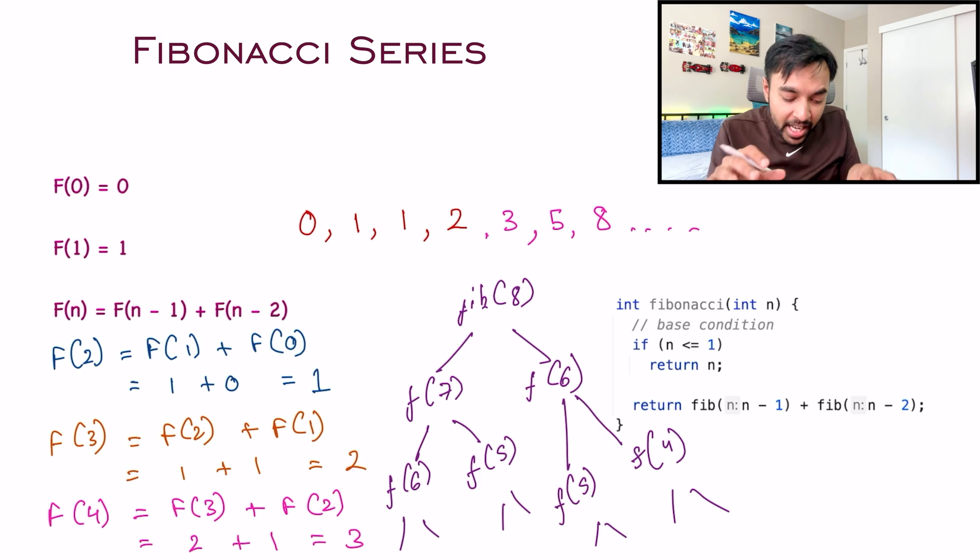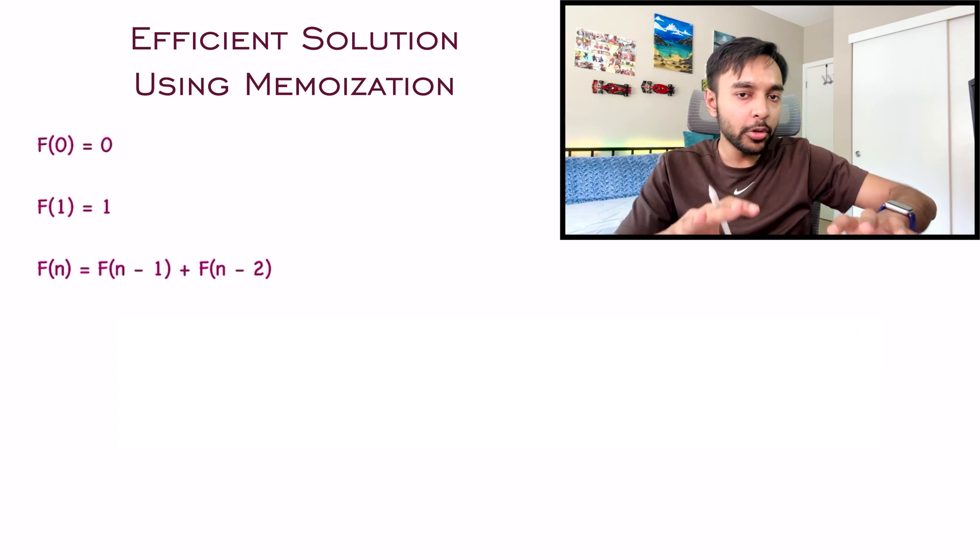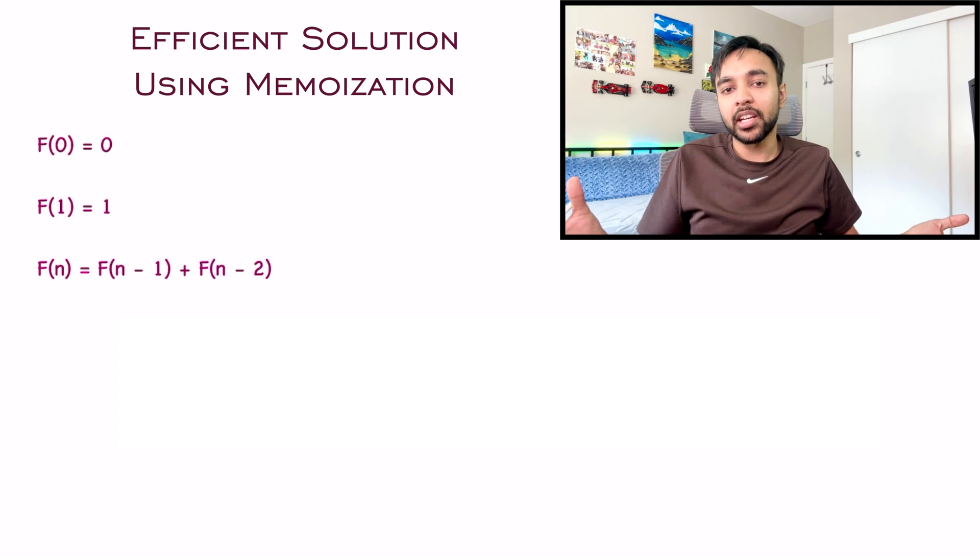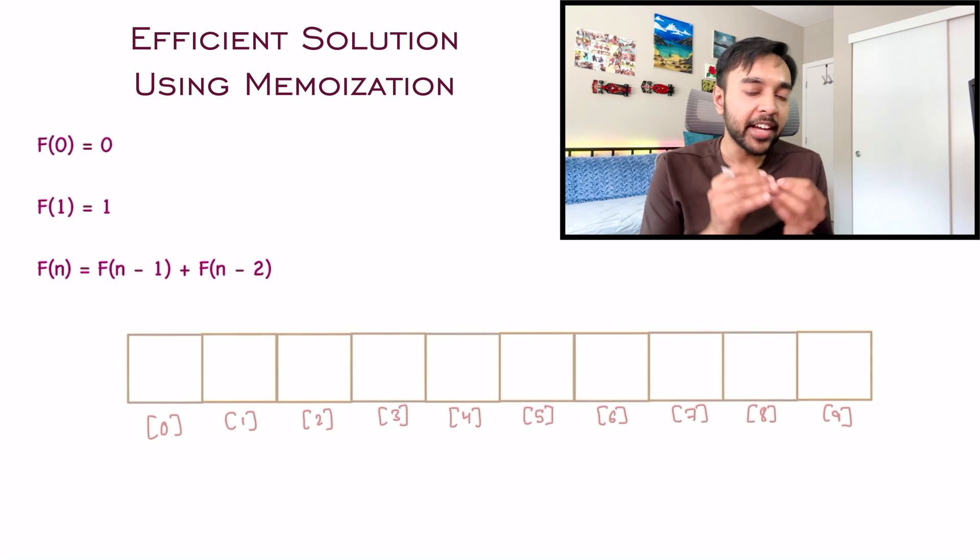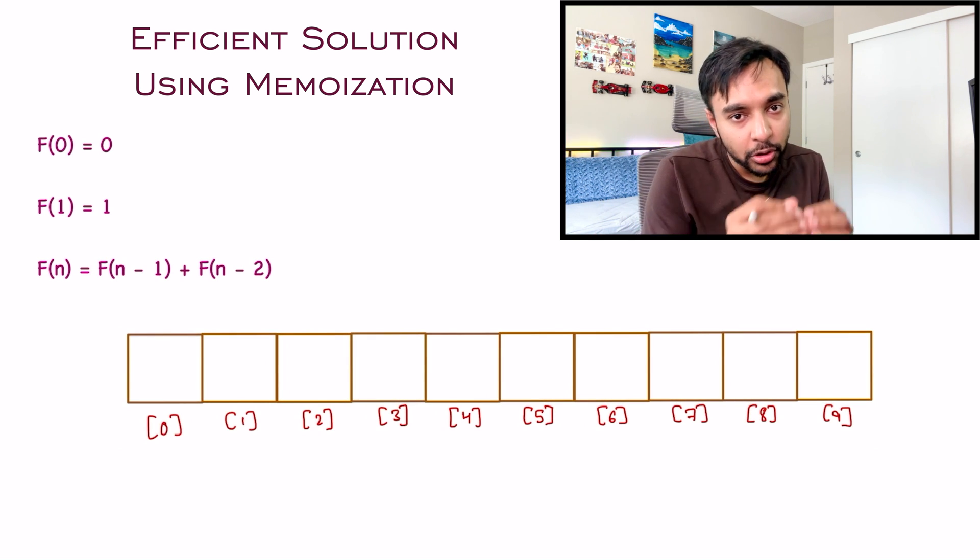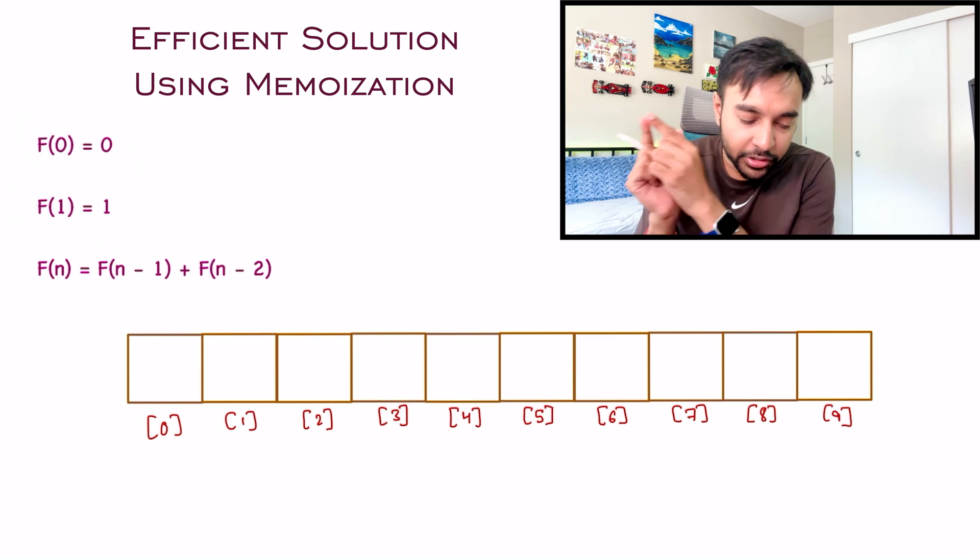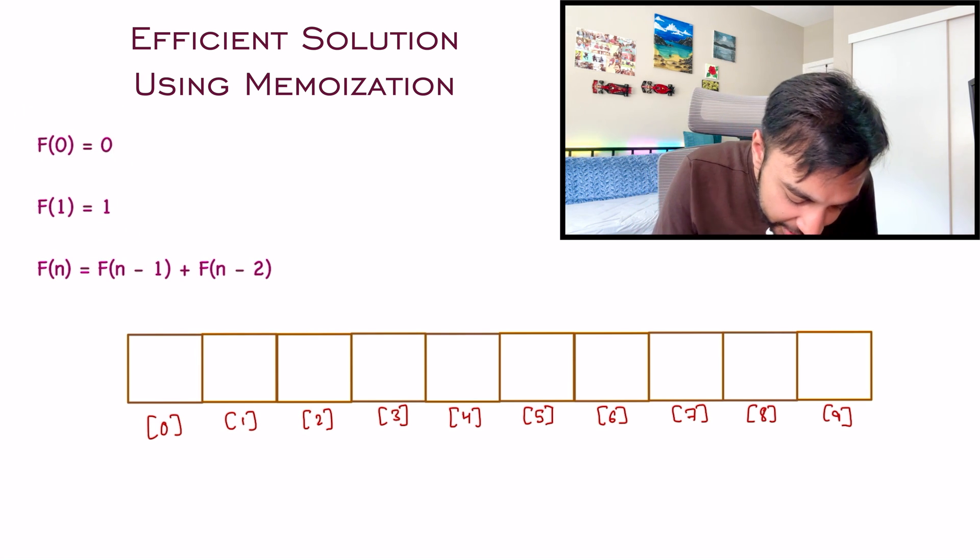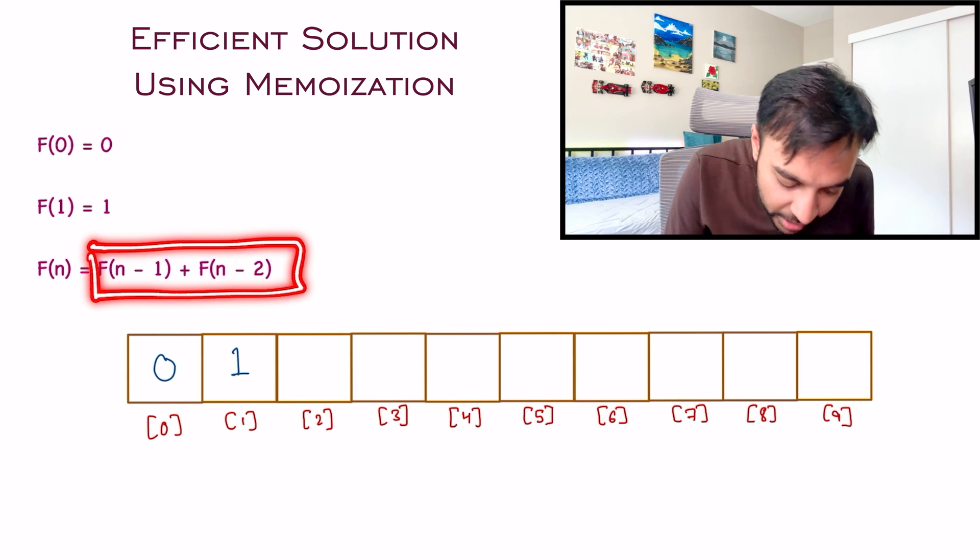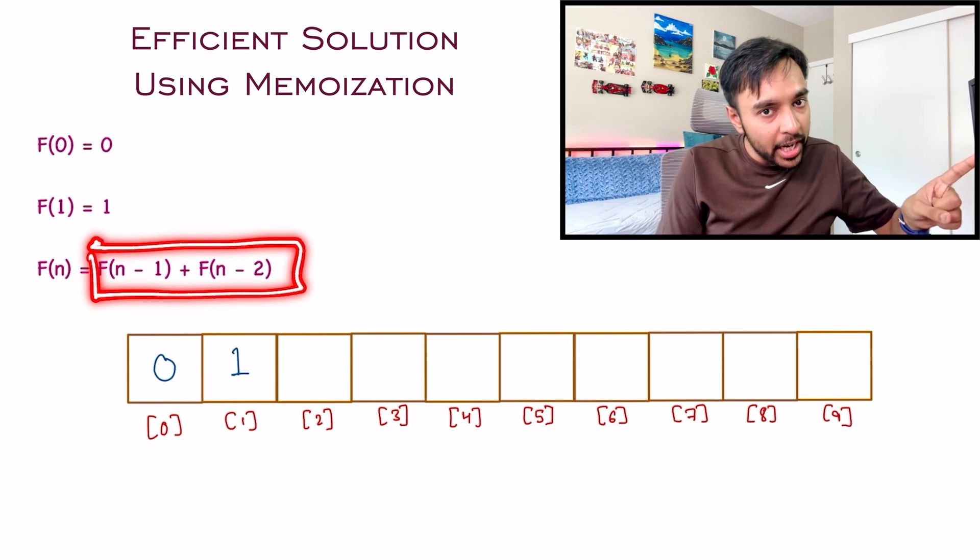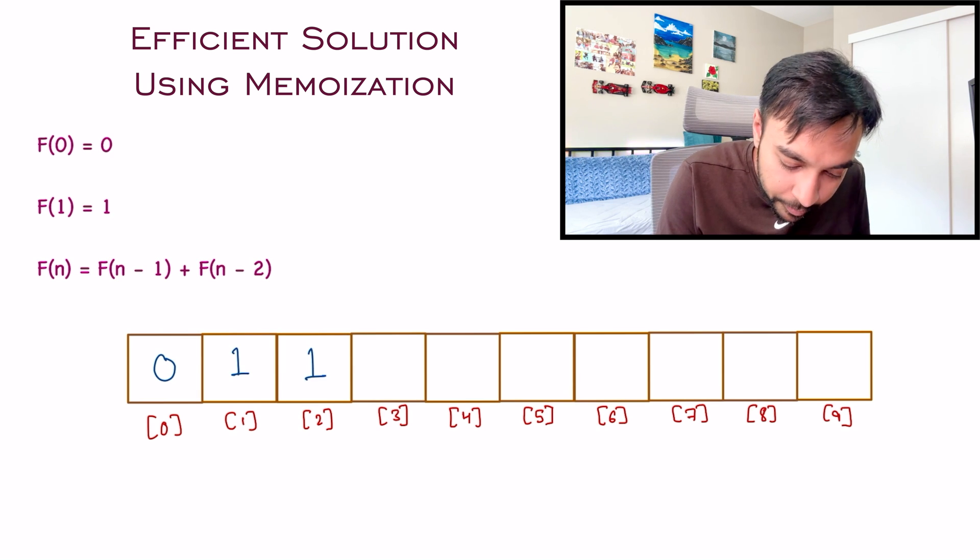Don't worry, dynamic programming is very easy. Once again, you have your starting conditions. Since you need to use memoization, you need a place to store all your results. Memoization simply means storing results so you can reuse them later. I'll take the help of an array. In this array, I'm going to reuse all the results I've already calculated. First, I have F(0) equals 0 and F(1) is 1, so I add these two values to my array initially.